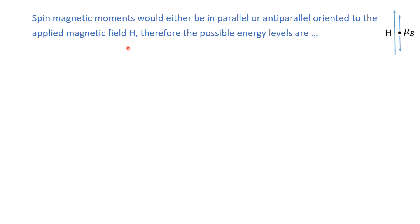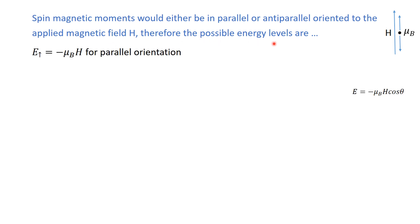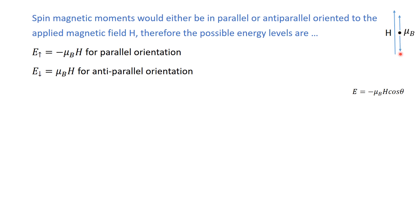The spin magnetic moment would either be in a parallel or anti-parallel orientation to the applied magnetic field. Therefore, the possible energy levels are: one for the parallel orientation and one for the anti-parallel orientation. There are only two possible orientations — either spin-up or spin-down — and no other possibility. That is why the spin of the magnetic moment is one-half; only two possibilities exist.